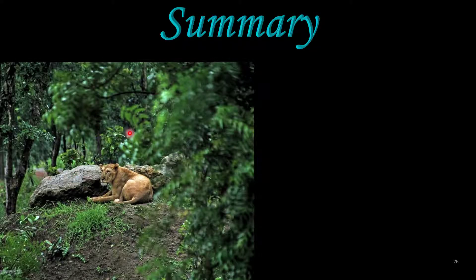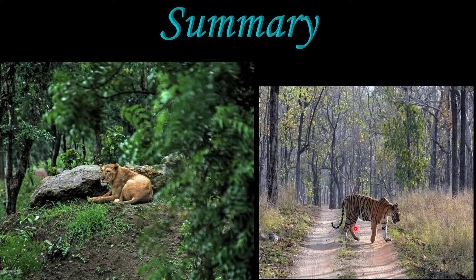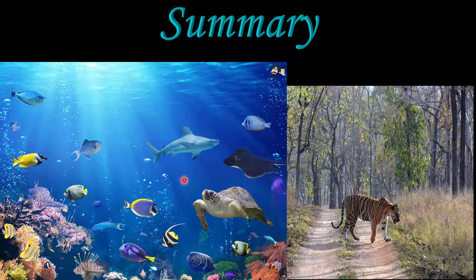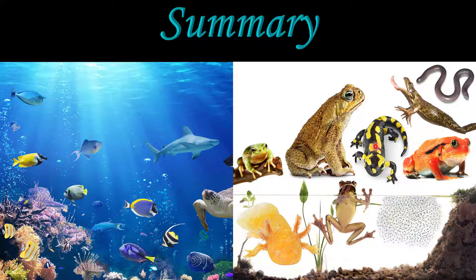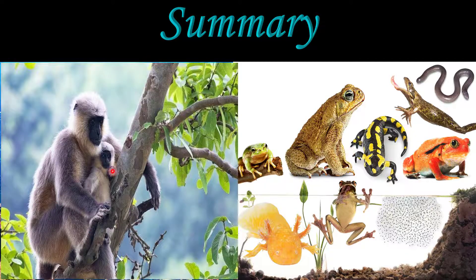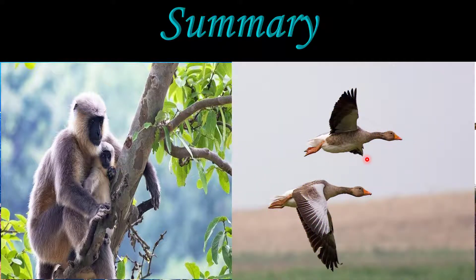Now let's have a summary of this video. We talked about different types of animals living at different places — just like different types of plants live at different places. On the basis of their living, animals are divided into five categories: terrestrial animals that live on land, aquatic animals that live in water, amphibian animals that live on both water and land, arboreal animals that live on trees, and aerial animals that spend most of their time in air.